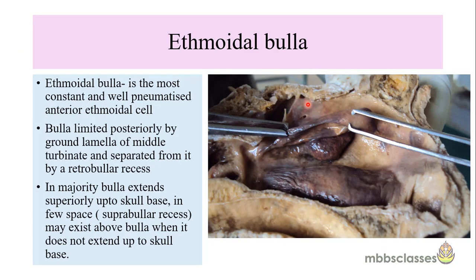The next constituent of the osteomeatal complex is the ethmoidal bulla, which is the most constant, prominent, and well-pneumatized anterior ethmoidal cell. The ethmoidal bulla is limited posteriorly by the ground lamella of the middle turbinate — that is, where the middle turbinate turns laterally and attaches to the lamina papyracea. Sometimes a space may exist between the bulla and the ground lamella called the retrobullar space. In most cases the bulla extends up to the skull base, but sometimes there may be a space above called the suprabullar recess, and these may communicate with each other.